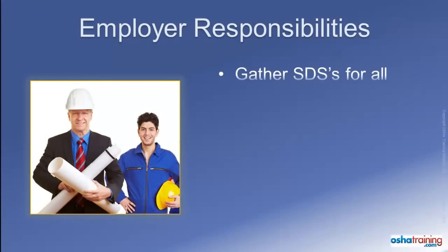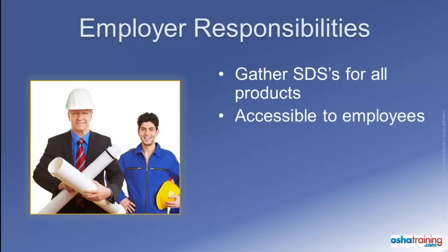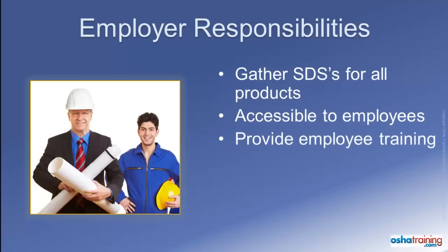Employers are responsible for gathering new Safety Data Sheets for all hazardous chemicals and products to which their employees are exposed, and making sure they are readily accessible during each work shift to employees while they are in their work areas. Employers must also provide training to their workers regarding the new Safety Data Sheet format. All these things must be done by the deadlines established by OSHA in their Revised Hazard Communication Standard.